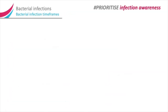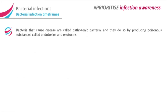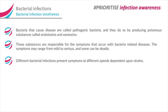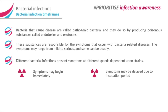Bacterial infection timeframes. Bacteria that cause disease are called pathogenic bacteria and they do so by producing poisonous substances called endotoxins and exotoxins. These substances are responsible for the symptoms that occur with bacteria-related diseases. The symptoms may range from mild to serious and some can be deadly. Different bacterial infections present symptoms at different speeds dependent upon the strain. Symptoms may begin immediately, may be delayed due to an incubation period, can progress slowly, or can worsen rapidly.